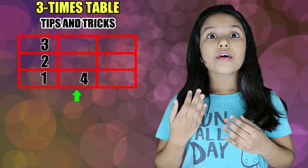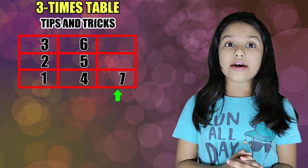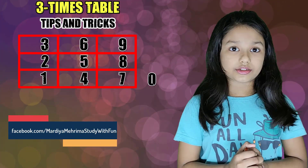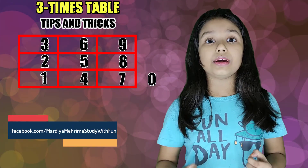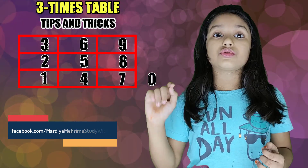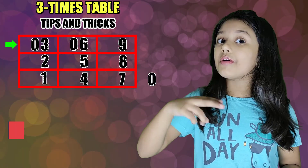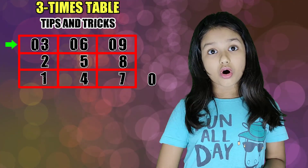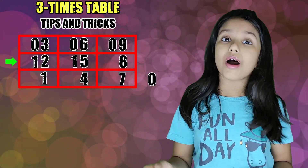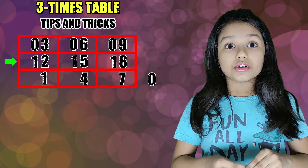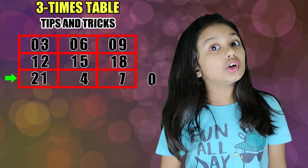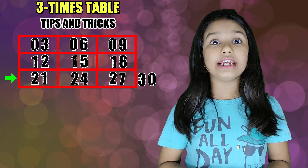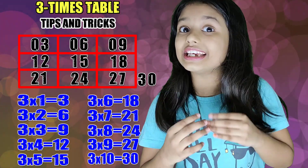Now we put one, two, three, four, five, six, seven, eight, nine and zero out of the box. Now we put the first row: zero, zero, zero. We put the second row: one, one, one. And we put the third row: two, two, two, three. Now we have the three times table — please check it.